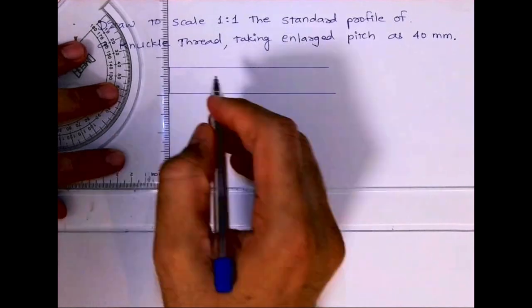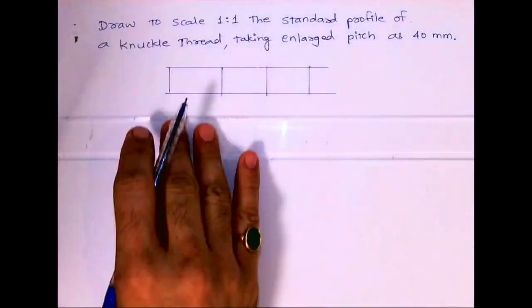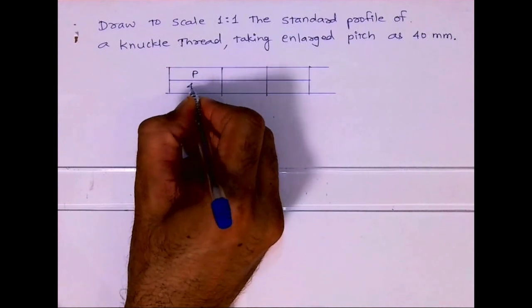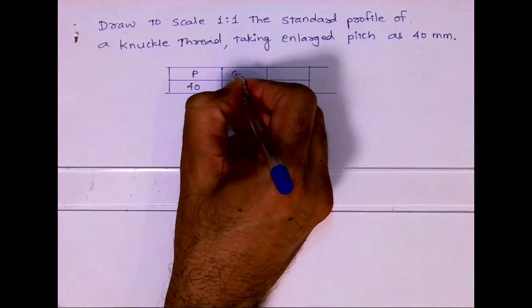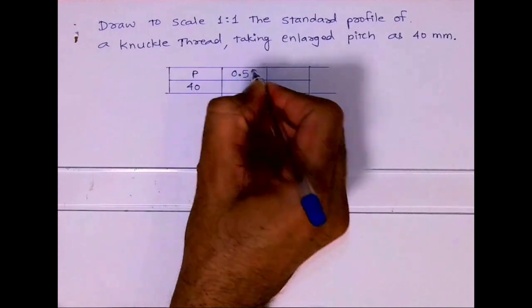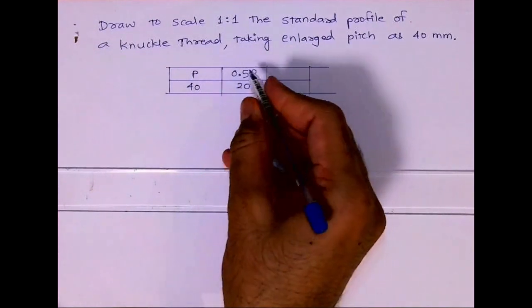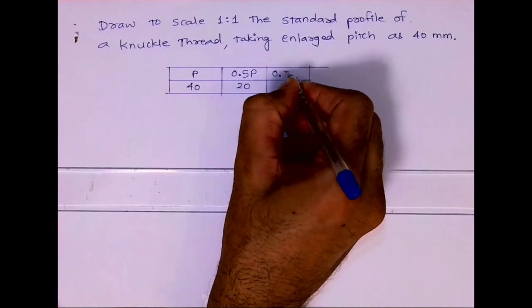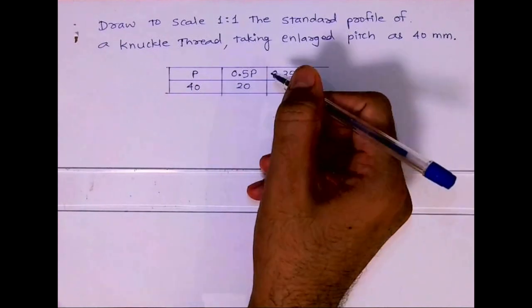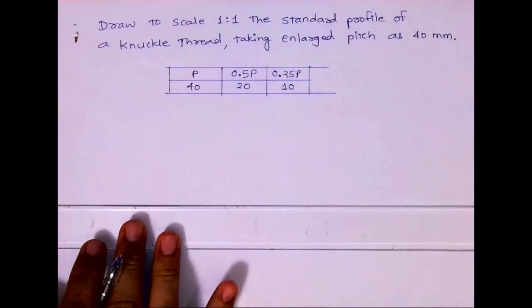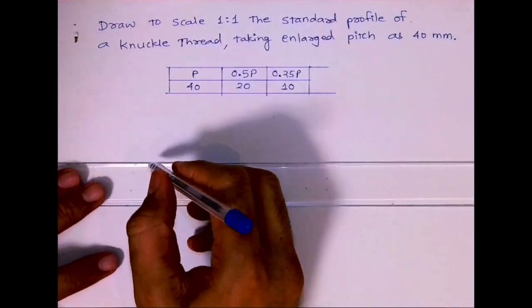We'll take pitch equals to 40, 0.5 pitch is equal to 20, and 0.25 pitch which is equal to 10 mm. So first we will write all these values. After that, I will draw one line and what I need to do is draw radius 10.